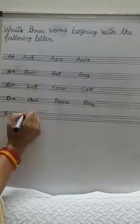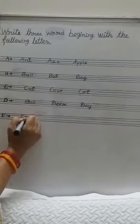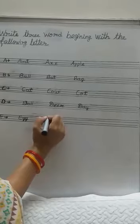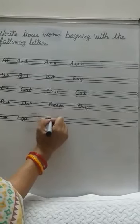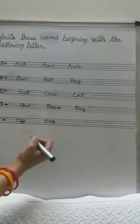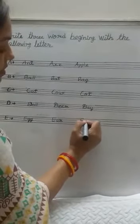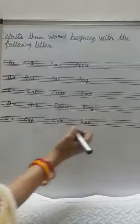E for E-G-G, Egg. Egg means anda. E-A-R, Ear. Ear means kaal. E-Y-E, Eye.